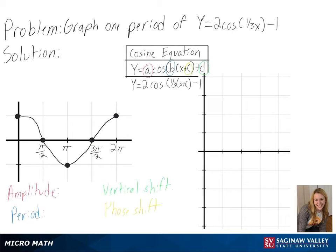We can see that we don't have a phase shift, but we do have a vertical shift of negative 1, which will make our whole graph go down one unit, so our center will be at negative 1.